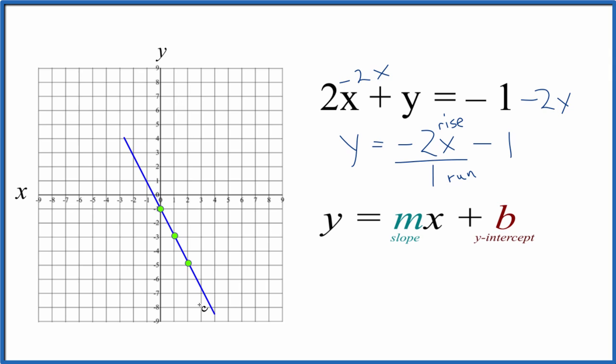Let's put a line through that. Then we'll put arrows here to show that this goes to infinity. And this is the graph for 2x plus y equals negative 1.